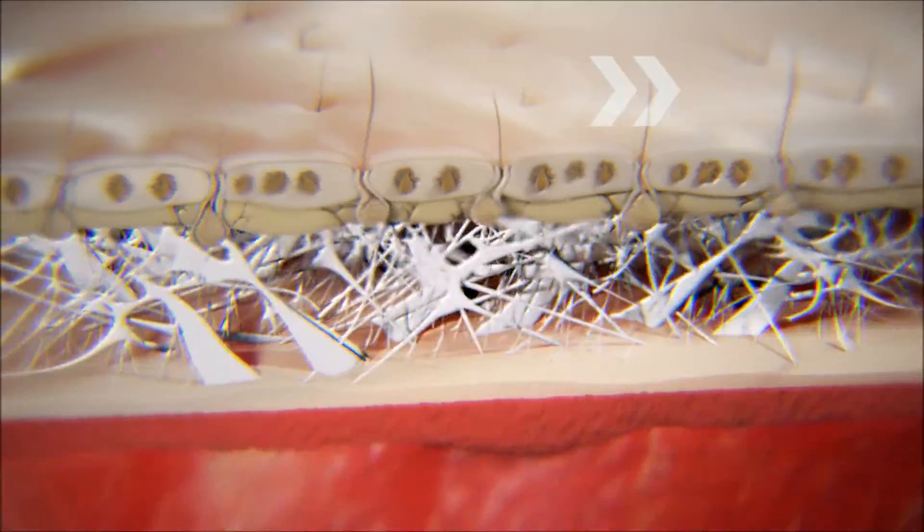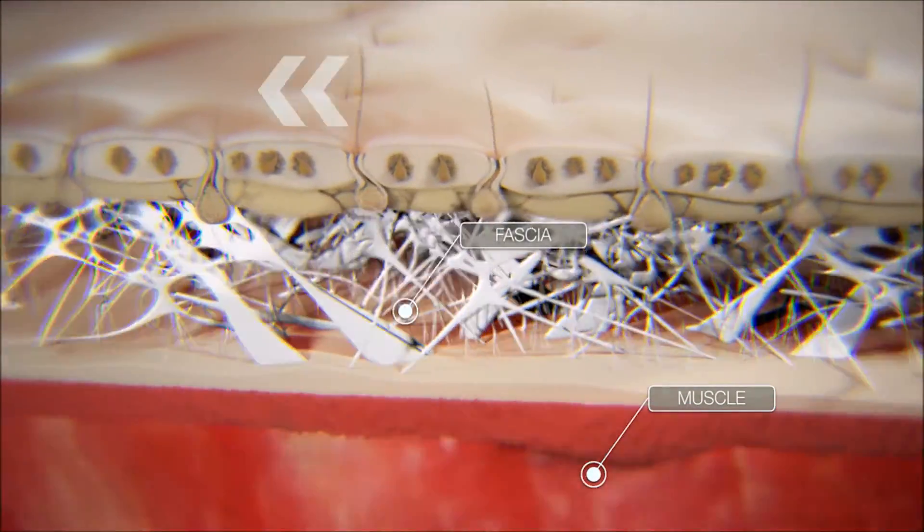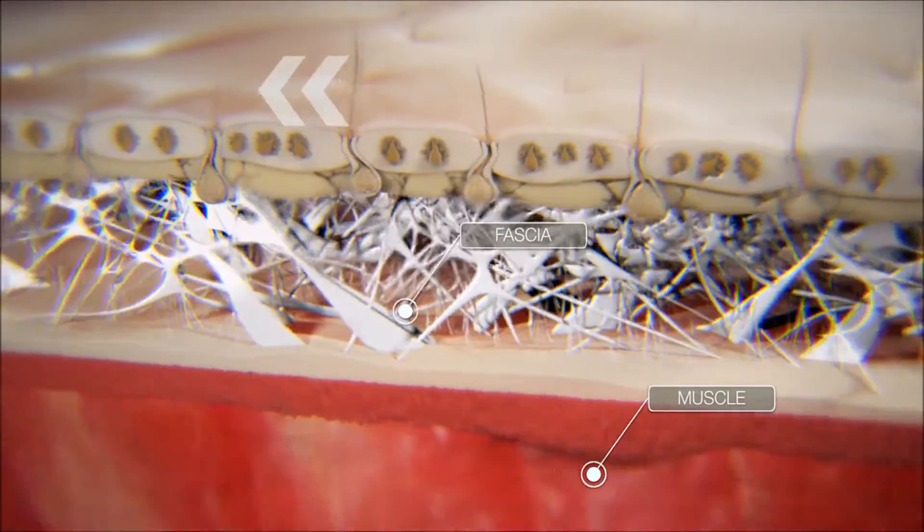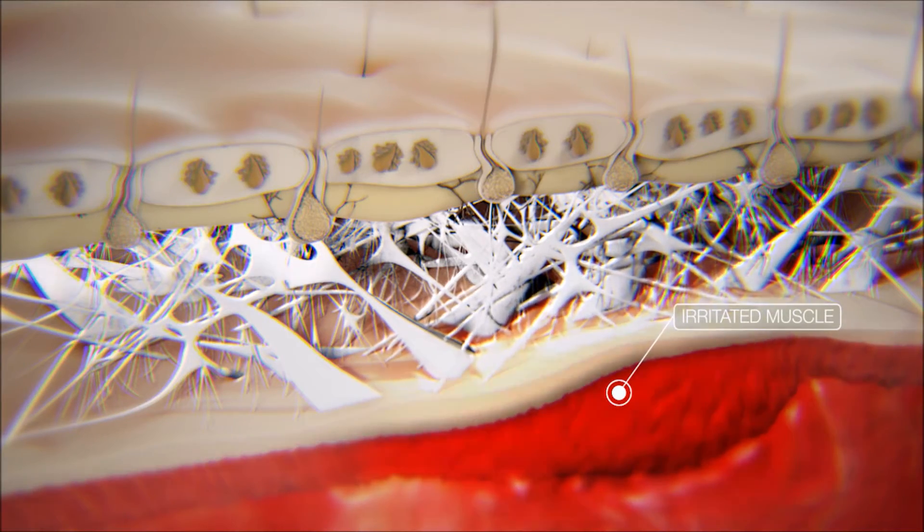In a healthy system, the muscle will slide and move without restriction. When a muscle becomes injured, the rate of collagen production by local fibroblasts is increased.